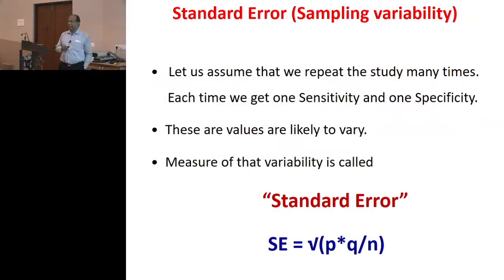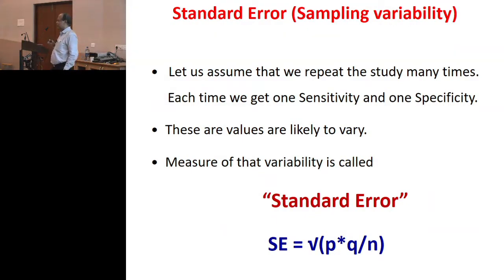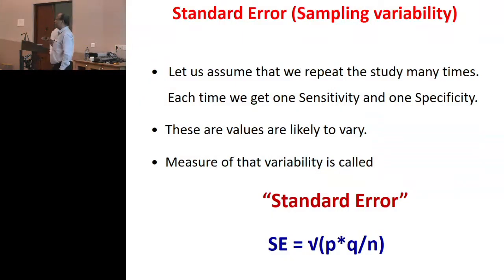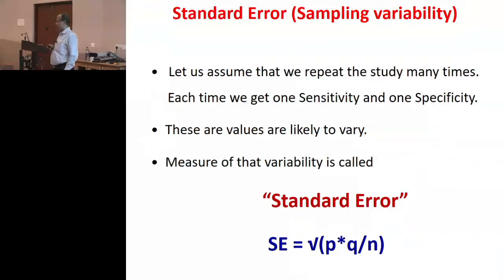What is the kind of variability that 80% sensitivity and specificity can have? It is not one fixed value — it is likely to change if somebody repeated the study. How do we assess that variability? This is basically the standard error, meaning that as you repeat the study, today you might get 80, tomorrow 85, the day after 75. What is the kind of variability that can go around 80%? It is called the standard error.